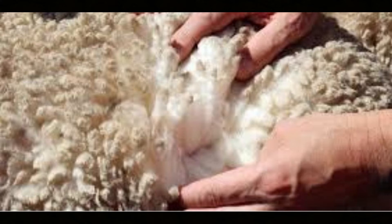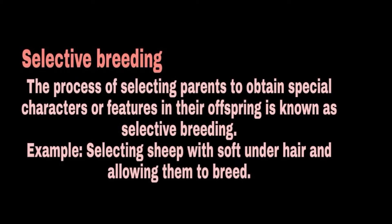Wool is mainly obtained from the fine soft under hair. We obtain breeds of sheep that possess only fine under hair — their parents are specifically chosen. This process is called selective breeding. Selective breeding is the process of selecting parents for obtaining special characters in their offspring.